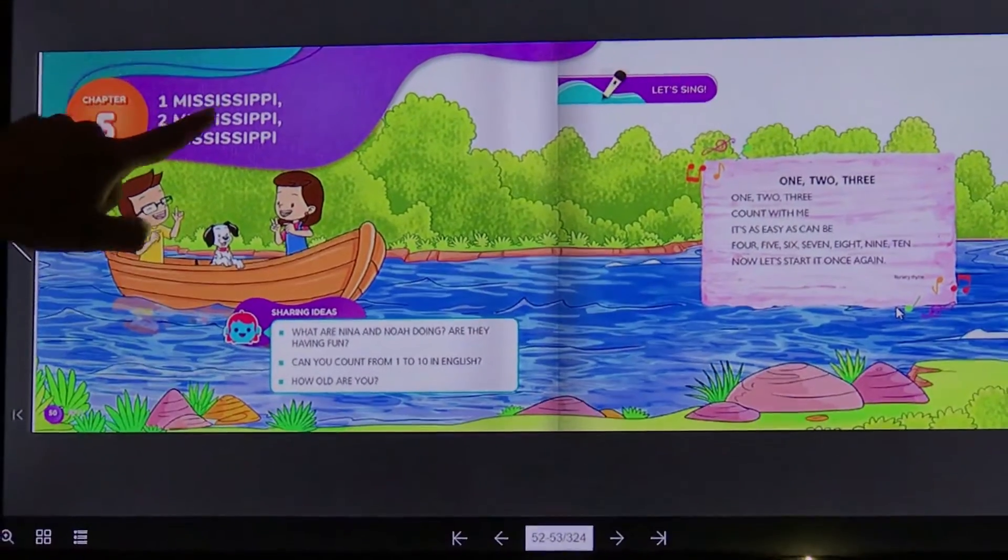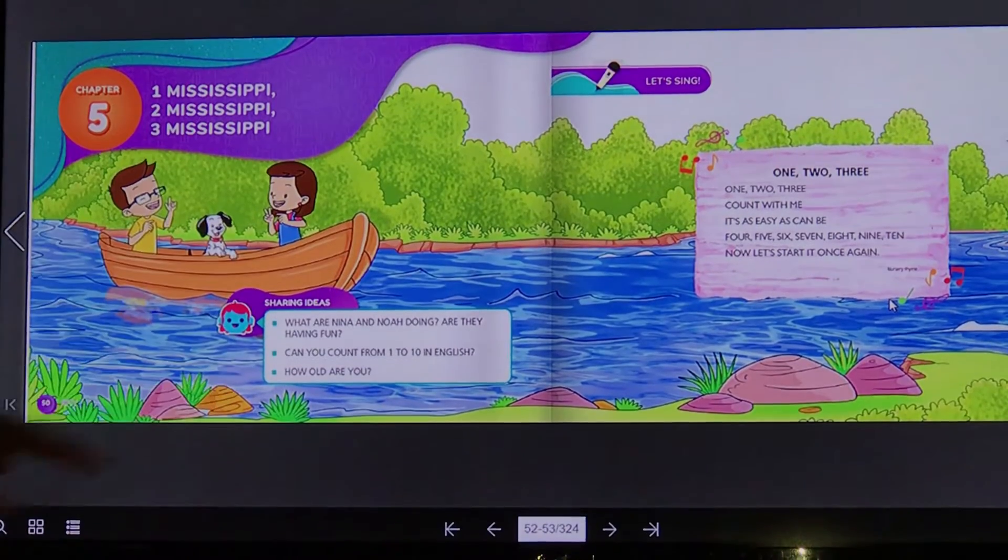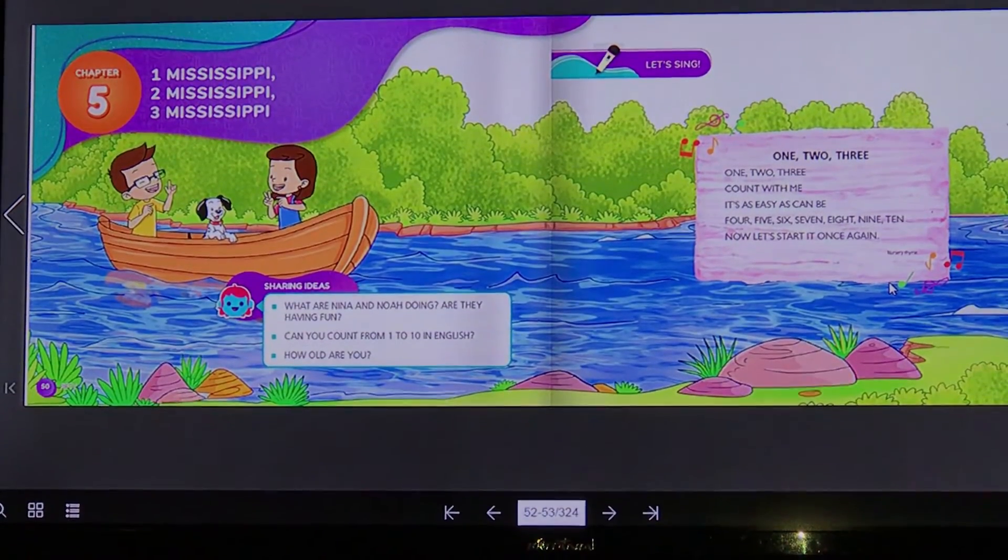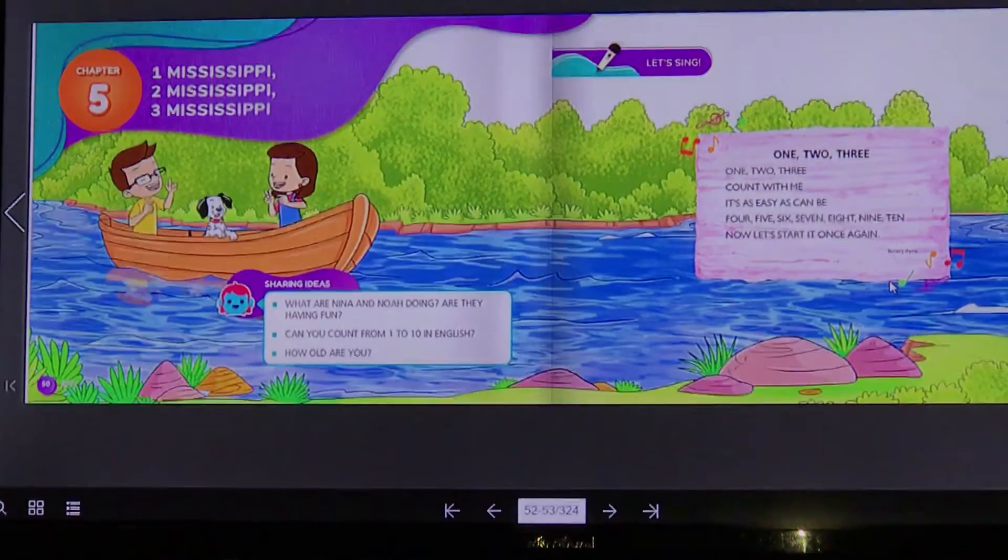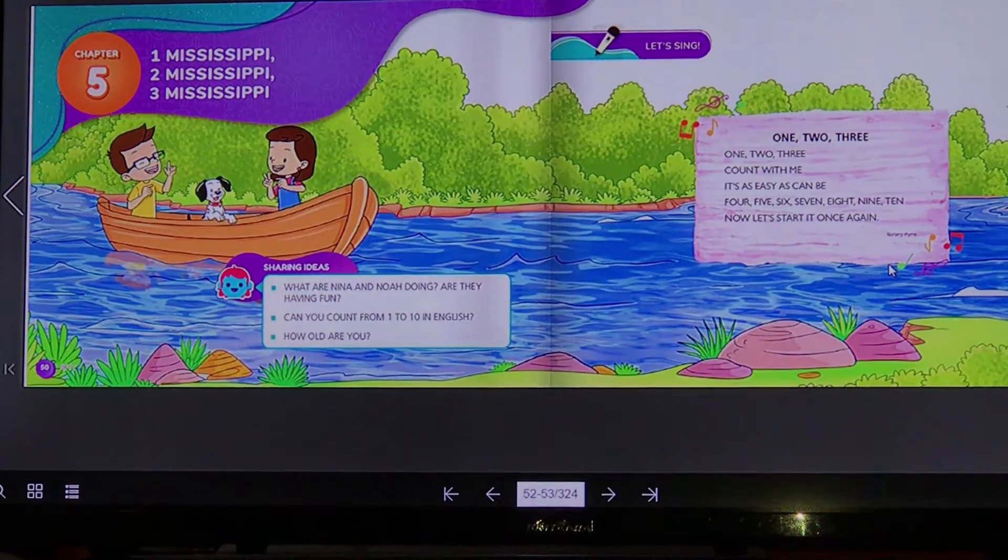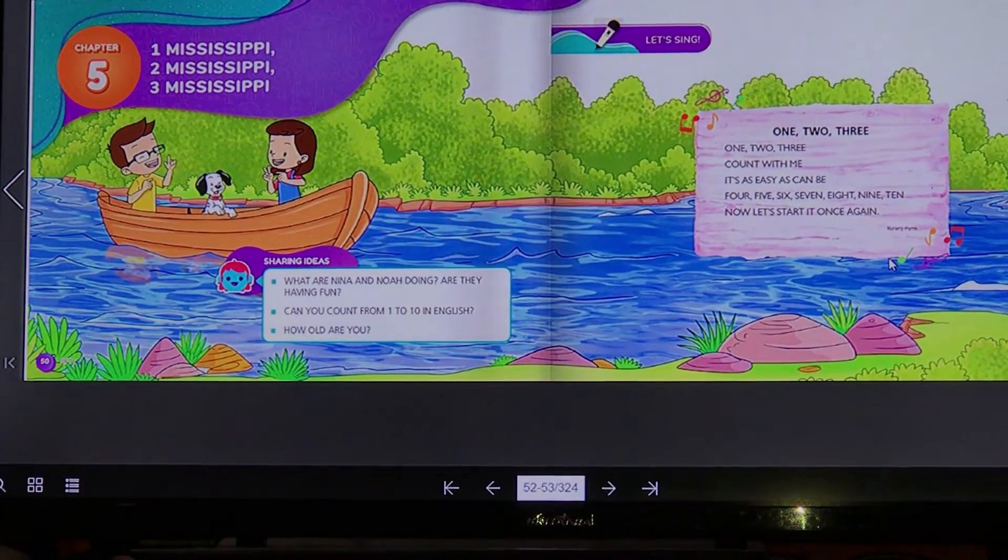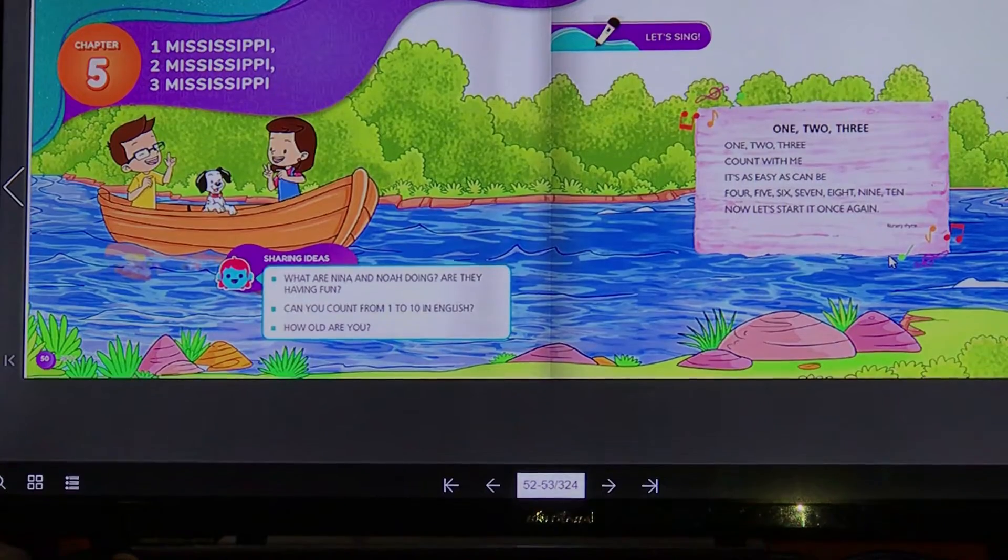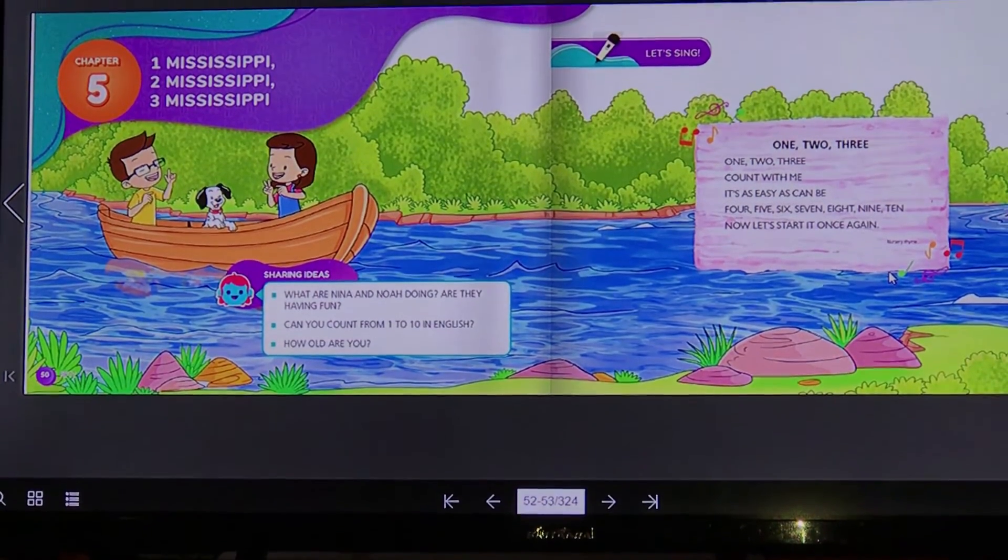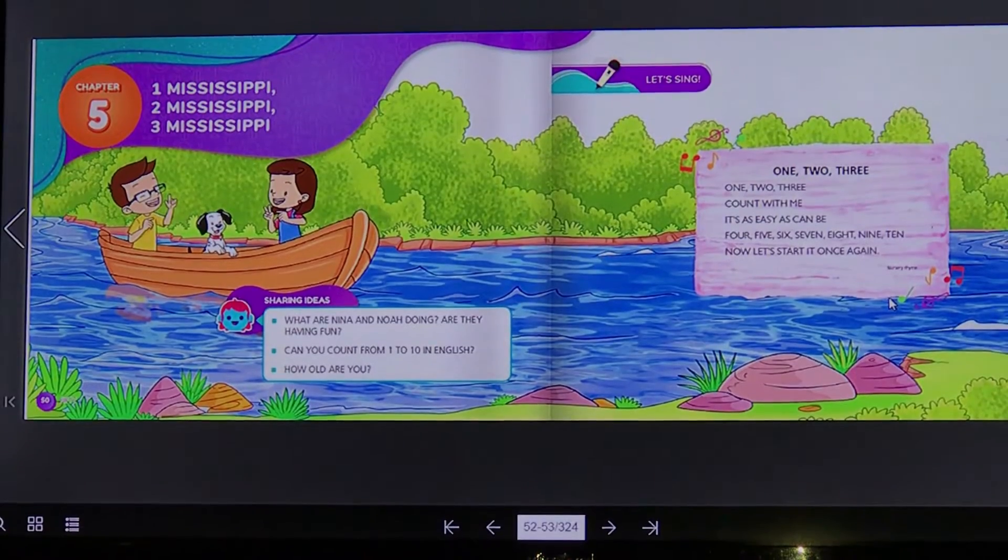Chapter five. One Mississippi, two Mississippi, three Mississippi. Look at the pictures. Olha para a figura. O que que a Nina e o Noah estão fazendo? Eles estão contando. They are counting in English. Eles estão contando em inglês. E para contar, eles estão usando a brincadeirinha do Mississippi.